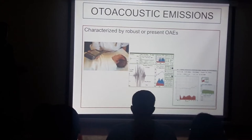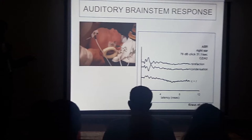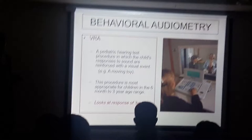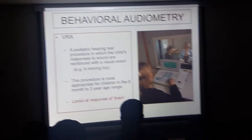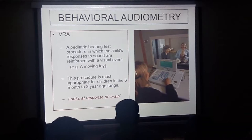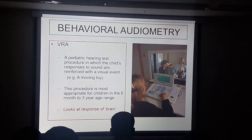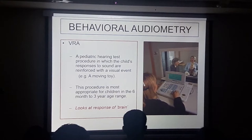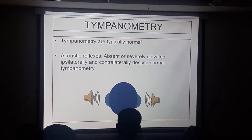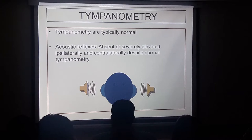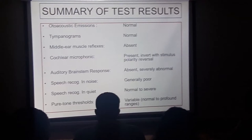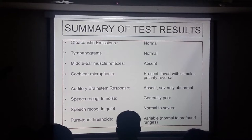You will usually find robust OAEs because the outer hair cells are intact. ABRs will be negative, abnormal, or absent. Behavioral audiometry is also important to understand whether the child is actually able to hear — is the sound actually reaching the cortex? Tympanometry is needed to rule out any middle ear cause; tympanometry may be normal in these conditions, but the acoustic reflex will be absent. In summary: OAEs normal, tympanometry normal, middle ear reflex absent, otoacoustic emissions present, speech recognition scores generally poor despite varying pure-tone levels.